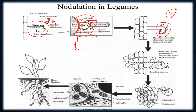Cytokinin and auxin are synthesized, causing a mass or clump of cells that makes the root hair curl inward. These regions divide very rapidly, and root hairs start to curl after Rhizobium contact. After infection, the bacteria move toward the cortex.